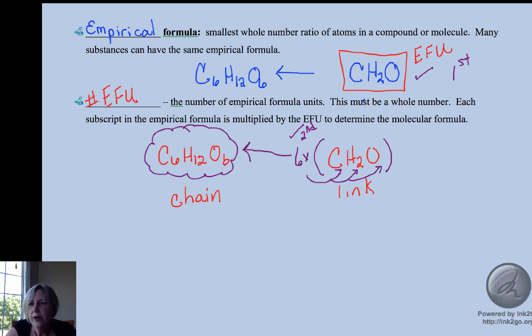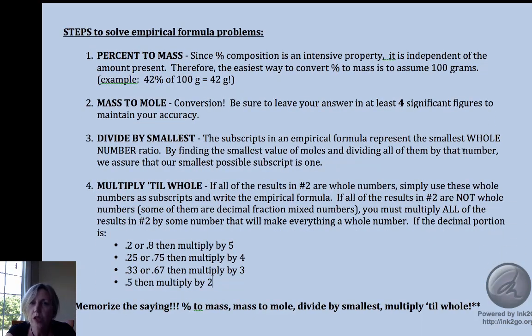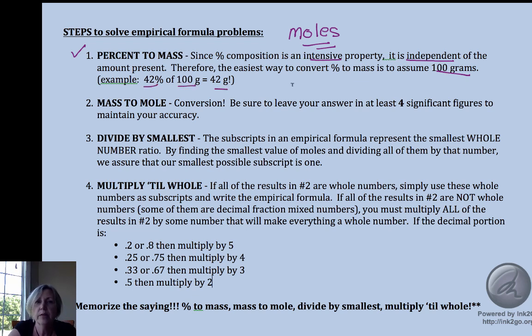There are some steps to doing this. We're looking for a mole ratio, so we're going to have to get to moles because those subscripts give us a mole ratio. You may be given percents. If you're given percent, since percent composition is intensive, it is independent of the amount present. We're going to assume 100 grams because it's really easy to take a percentage of 100 grams. 42 percent of 100 grams is 42 grams. All we're going to have to do for this step is drop the percent sign and put a mass sign.